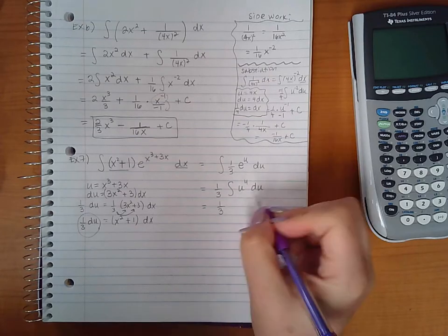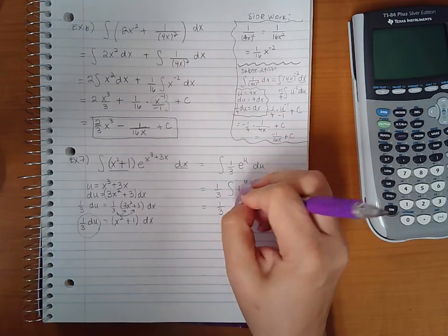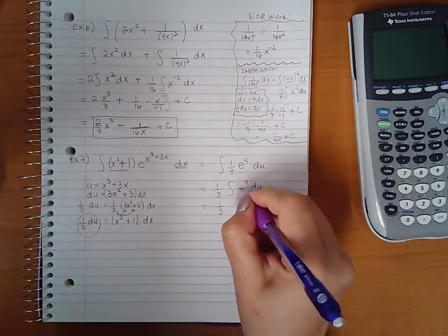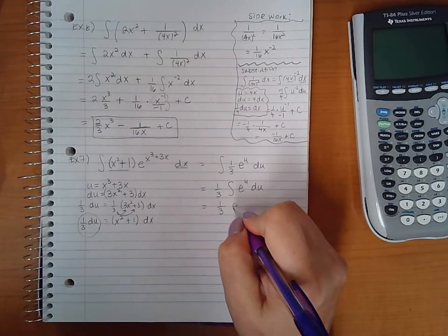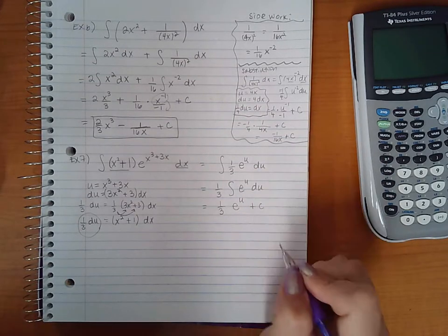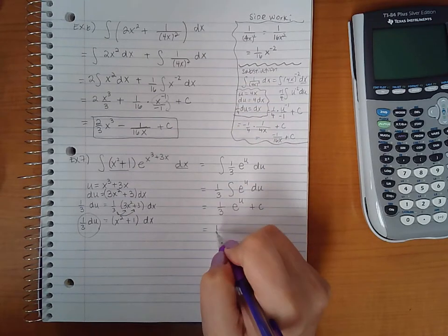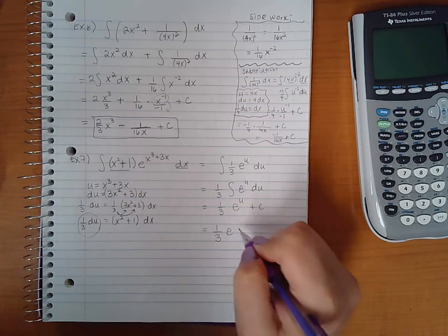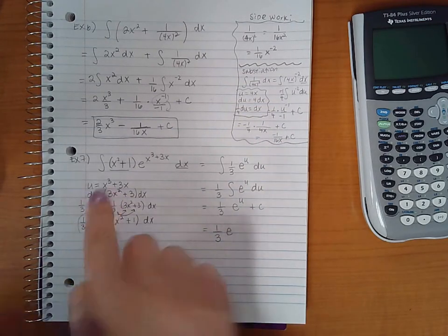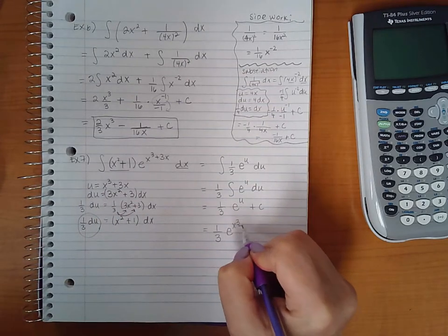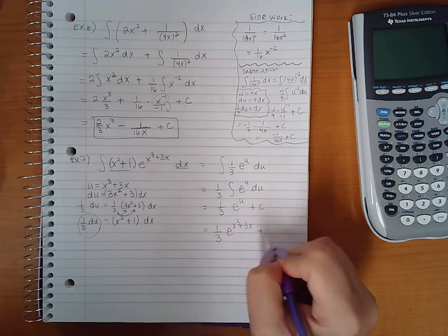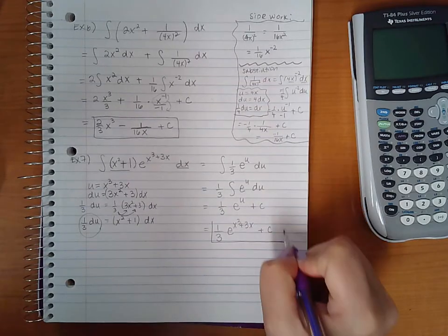Oops, I wrote u to the u, that's not right. The integral of e to the u is just e to the u plus c. But again we have to back sub, so what was u? u was x cubed plus 3x, and this is the formal way to write that answer. Therefore we are done with this particular problem.